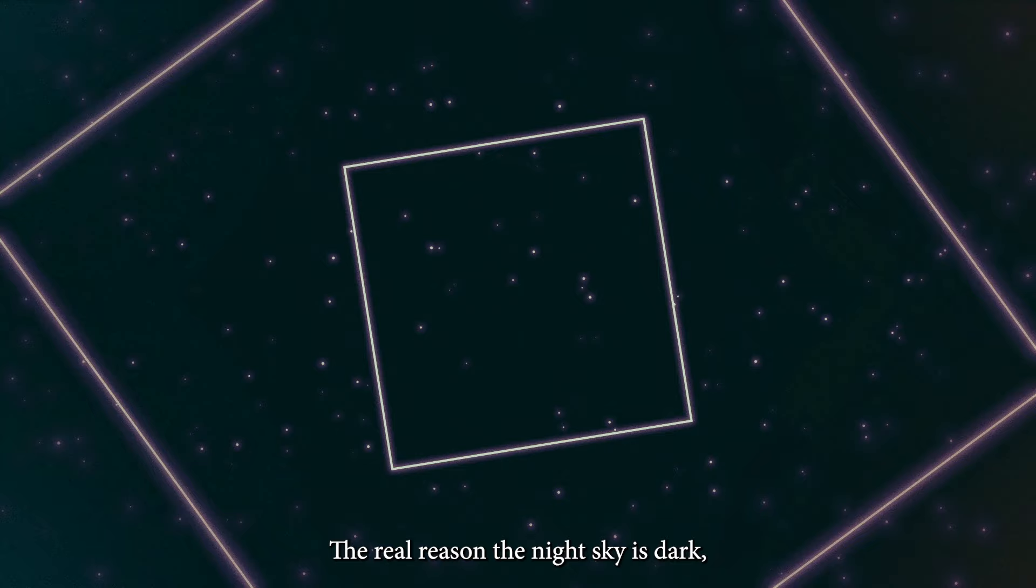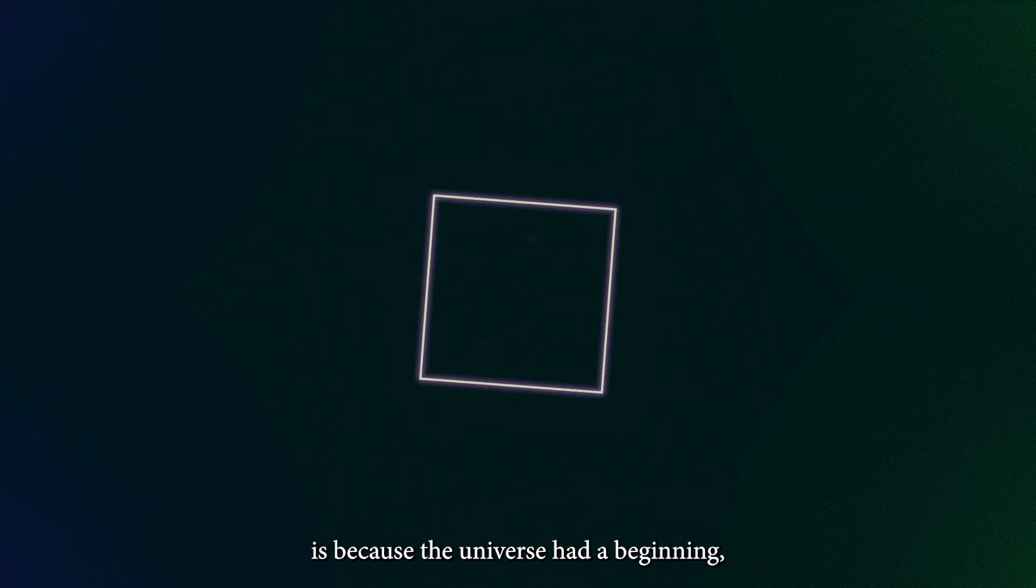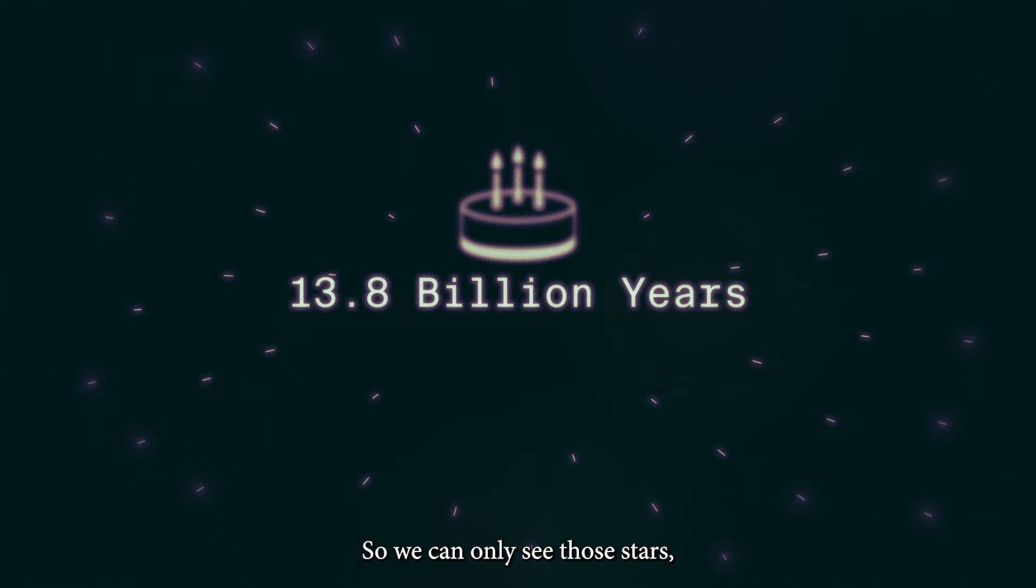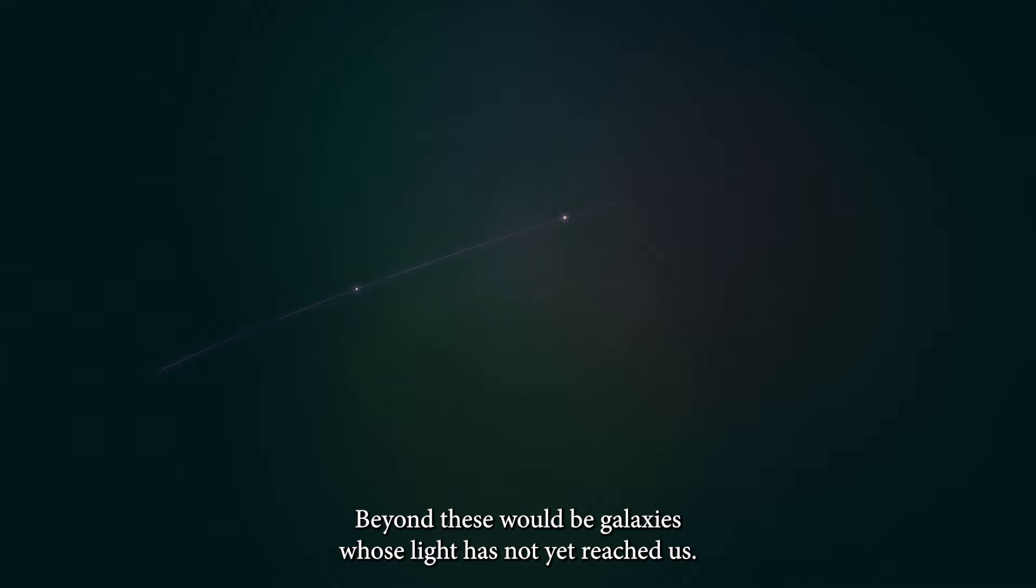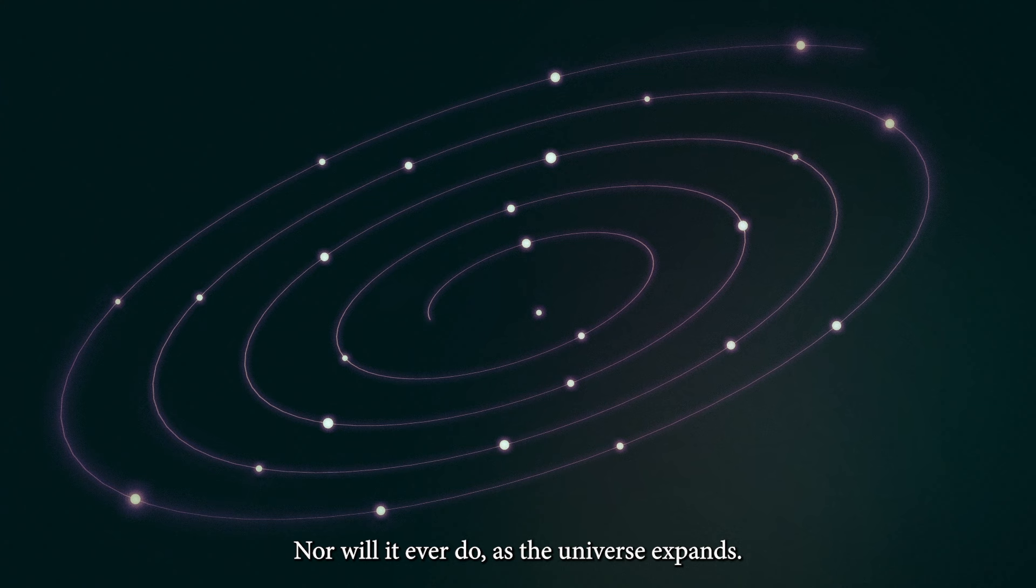The real reason the night sky is dark is because the universe had a beginning 13.8 billion years ago. So we can only see those stars, or rather galaxies, that are close enough to us for their light to have had time to reach us. Beyond these will be galaxies whose light has not yet reached us, nor will it ever as the universe expands.